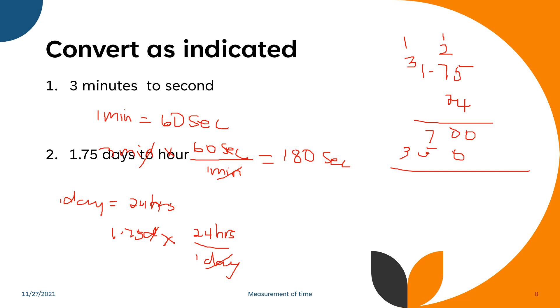2 times 1 is 2, plus 1 is 3. So we have 0, 0. 7 plus 5 is equal to 12. So there are 42 hours in 1.75 days. So that's equivalent to 42 hours.